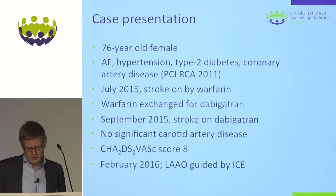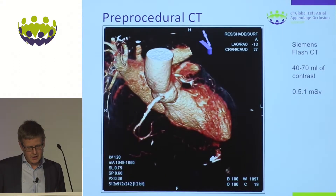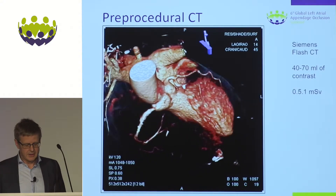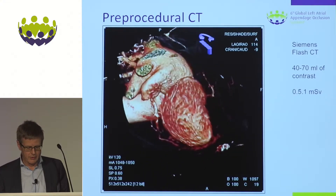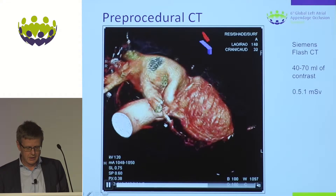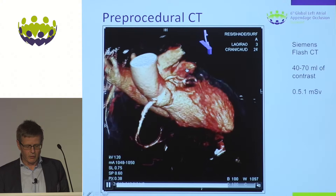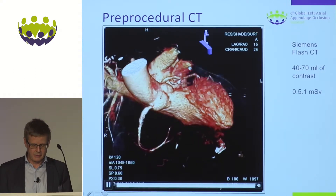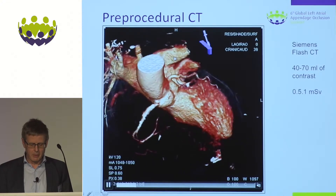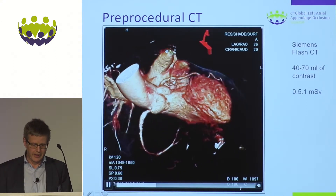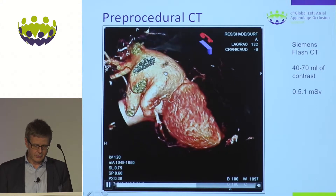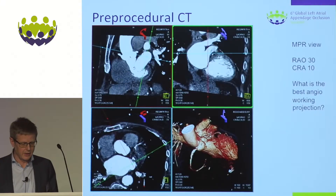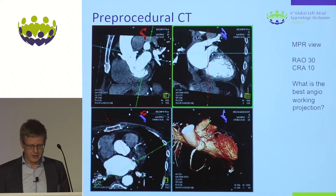A few weeks ago we closed this appendage guided by ICE. In all cases I use a pre-procedural CT scan, because I think that is the superior imaging modality for understanding left atrial appendage anatomy. In this case you see a quite straightforward, almost tube-like appendage. You get the distance to the upper pulmonary vein, which is quite large, and the relation to the circumflex artery — you can gain a lot of information from the CT data sets, especially using multi-planar reconstruction.